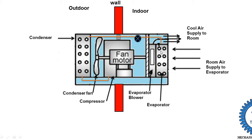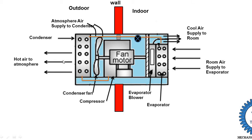After absorbing heat, the high-temperature refrigerant is supplied back to the compressor and then passed into the condenser, where the heat is rejected. A fan is provided to supply atmospheric air toward the condenser. That air transfers the heat, and the hot air coming out from the condenser is released to the atmosphere. This is the complete working of the window air conditioning system, which is the same as a refrigeration system with one fan and a blower added.